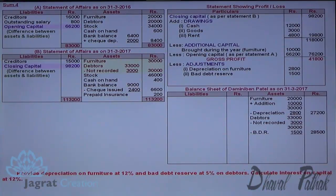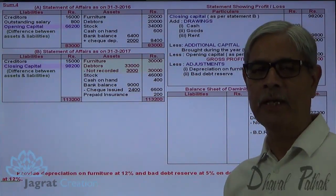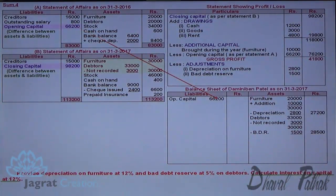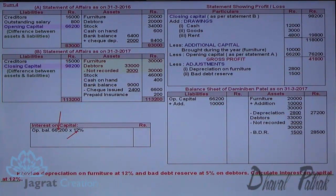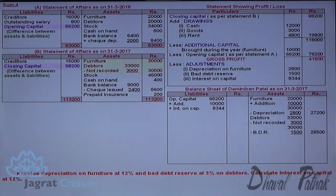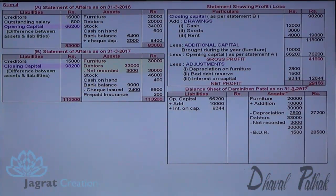Now calculate interest at 12% on capital. On the opening balance, interest will be calculated for the whole year, and on the additional capital brought by way of furniture, interest will be granted for 4 months. On opening capital — 12% for the whole year; on additional capital of 10,000 — 12% for 4 months. This is the total interest on capital, paid out of profits, so it is deducted from profit and added to the capital. After the adjustments, the profit is reduced by 12,644, giving profit after adjustment, which is added to the capital.